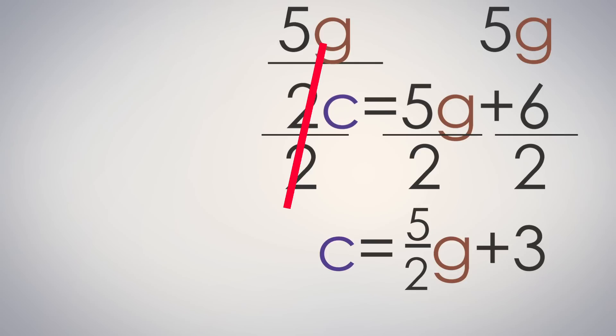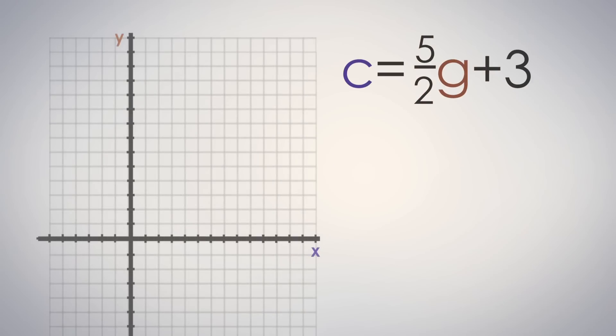Recall what the 5 over 2 represents, and think about what the 3 represents. 5 over 2 represents the slope, also known as the constant rate of change. And 3 is the y-intercept, also known as the initial amount. Having it in the slope-intercept form allows us to easily graph this equation. As we practiced in the previous video, we'll start by graphing the y-intercept. In this case, it is 3. Next, let's move the way our slope is telling us, up 5 and over 2. Now we'll connect the dots, and we're all done graphing.